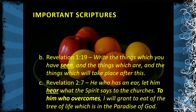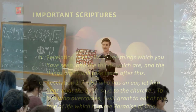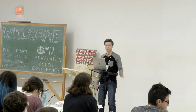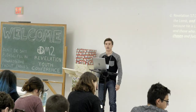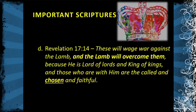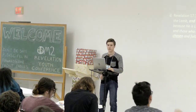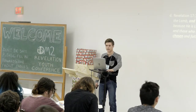Revelation 2:7 says: 'He who has an ear, let him hear what the Spirit says to the churches; to he who overcomes, I will grant to eat of the tree of life, which is in the paradise of God.' Listen to what Jesus has to say to these churches — it's important information. Revelation 17:14: 'These will wage war against the Lamb, and the Lamb will overcome them, for he is the Lord of Lords and King of Kings.' This is a clear example of Jesus being referred to as the Lamb.